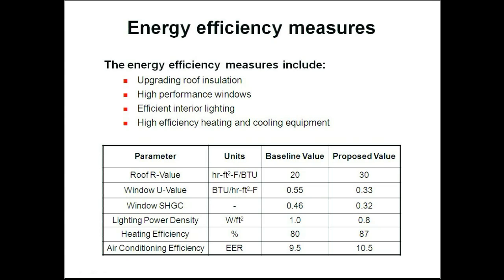The energy efficiency measures, which will establish our proposed building values, are going to be: upgrading roof insulation, establishing high-performance windows, efficient interior lighting, and high-efficiency heating and cooling equipment. In order to model those upgrades, we're going to change the roof R-value from 20 to 30. The window U-value will decrease from 0.55 to 0.33, and the window solar heat gain coefficient will likewise decrease to 0.32. The lighting power density will decrease by 20% to 0.8 watts per square foot. We're using condensing boilers now, so instead of 80% efficiency, we've jumped to 87%. Purchasing high-efficiency cooling equipment results in an EER of 10.5, up from 9.5. Here we see the new input values, which were acquired by adjusting the roof R-value, window U-value, etc., to the new values.